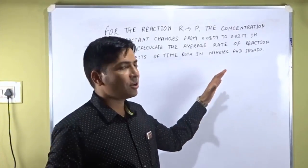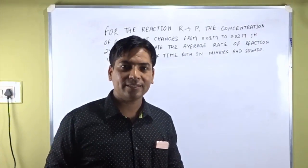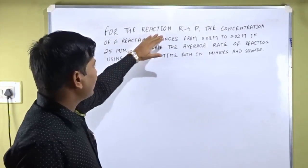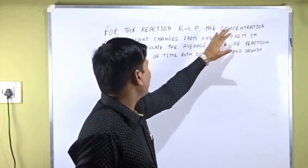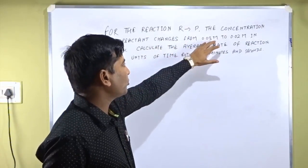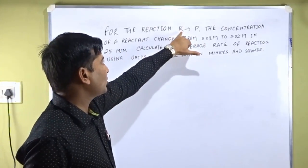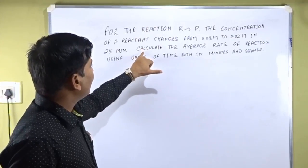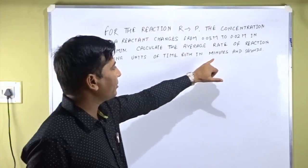Dear friends, in this problem I will discuss how the rate of reaction is affected when there is a change in the concentration of reactants. The problem gives a chemical reaction in which R is a reactant and P is a product. The concentration of reactant R changes from 0.03M to 0.02M in 25 minutes. The question asks us to calculate the average rate of reaction using units of time both in minutes and seconds.